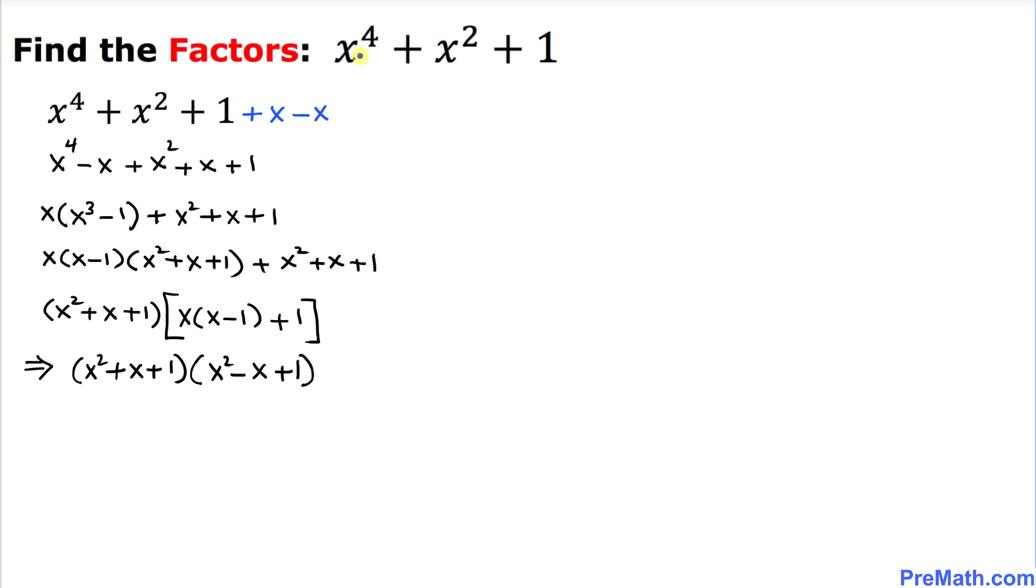That gives us x squared minus x plus 1. These are our complete factors of this trinomial. Thus, our factors are (x squared plus x plus 1) times (x squared minus x plus 1), and that is our final answer.